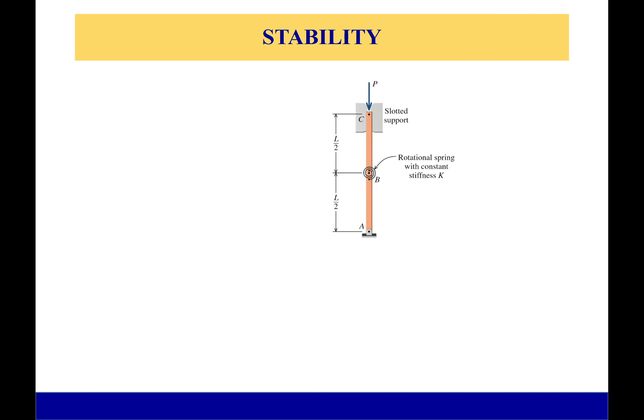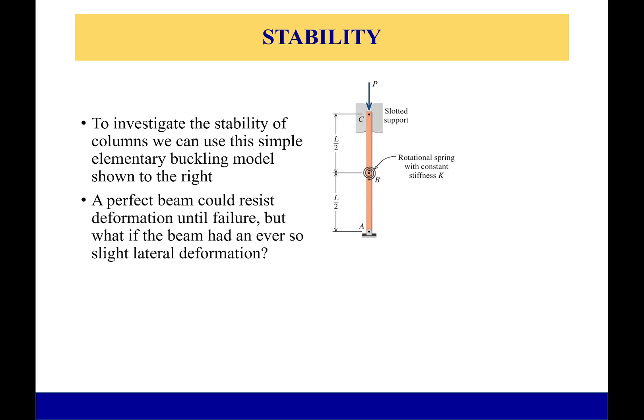Here I have a column at the top. It's allowed to move up and down if it wants to but it can't move side to side. I'm going to add a spring in the middle—this is our elementary buckling model. I have this because I need some way of figuring out what happens if my column ever moves to the side.